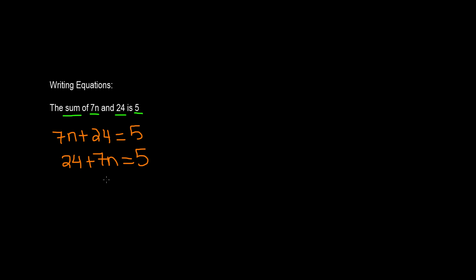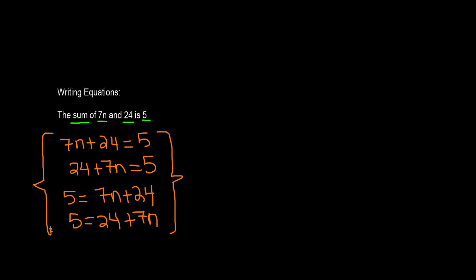But also, there's two other ways we could write this. If we just put it backwards and we put the 5 first, 5 is equal to 7n plus 24, or 5 is equal to 24 plus 7n. So as you can see, there's four different ways in which you can write an equation when it comes to addition from using these words.